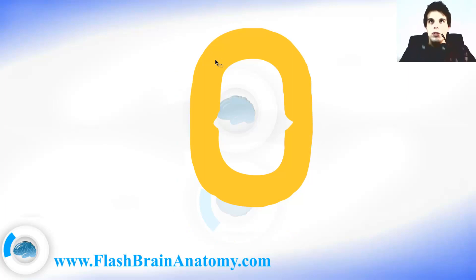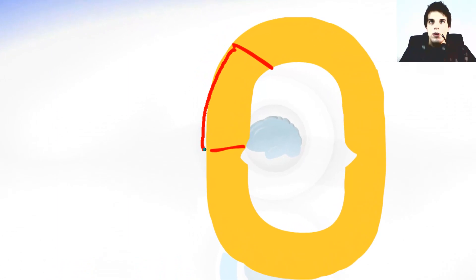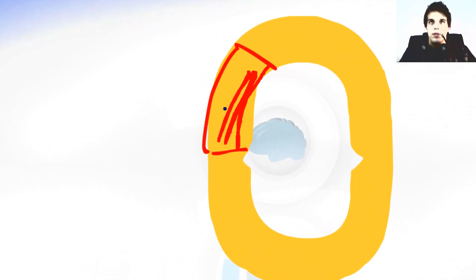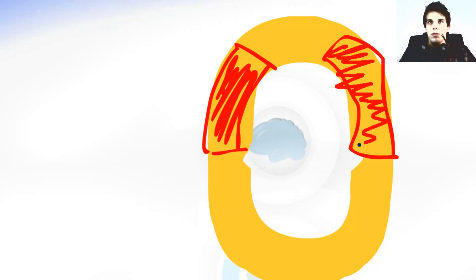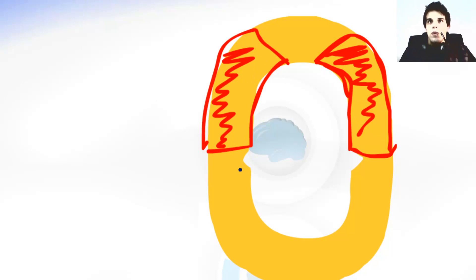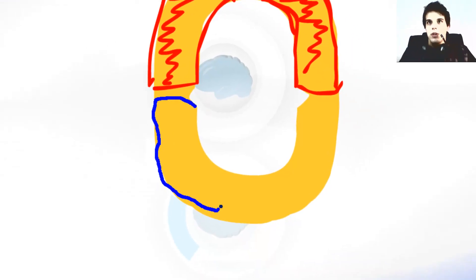The dorsal part contains the alar plate. That's over here. While the ventral part contains the basal plate. That's over here.